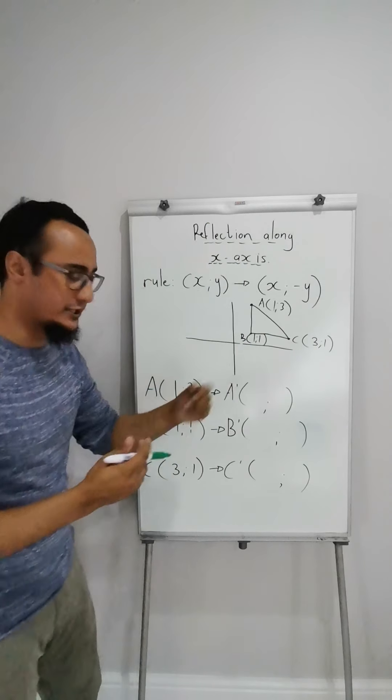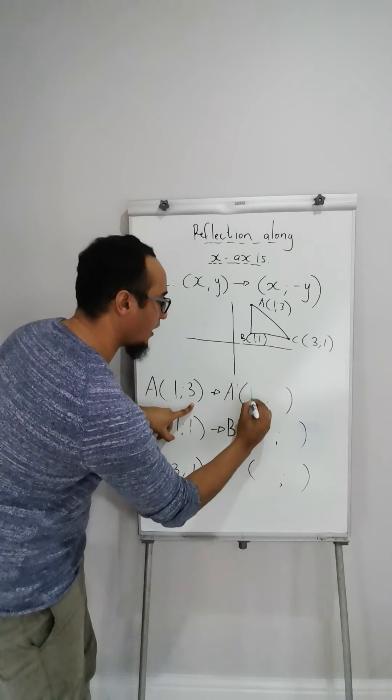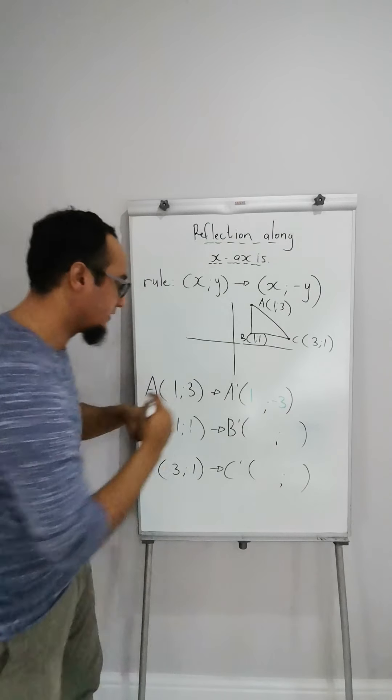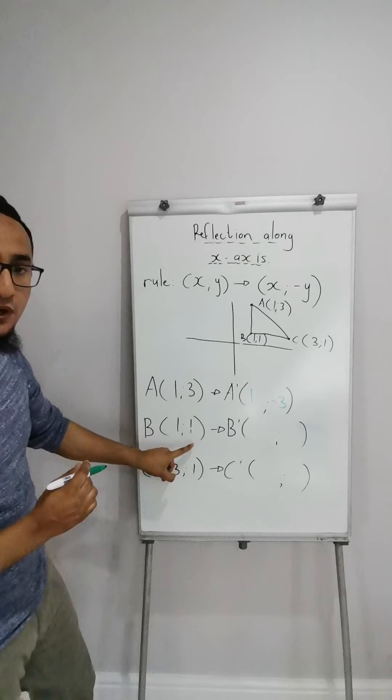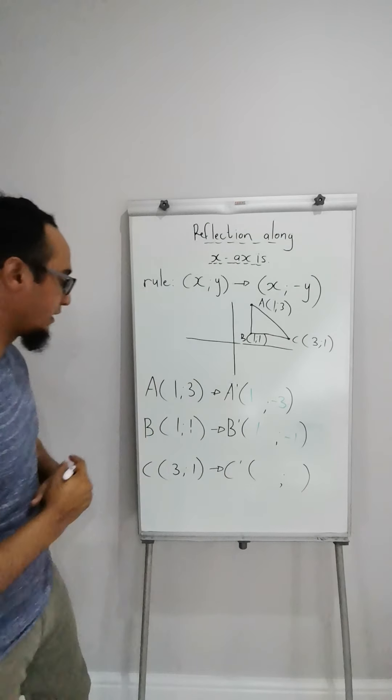Point number A is 1 and 3. Now, what is the rule? The x-sign changes. So if it's positive 1 over there, it's now going to be negative 1 and the y-value stays the same.